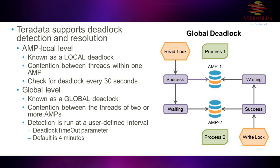The global level, known simply as a global deadlock, is contention between the threads of two or more AMPs. Detection here is run at a user-defined interval — the deadlock timeout parameter can be set, and the default is four minutes.